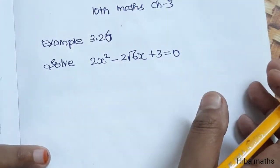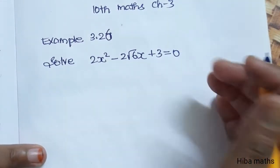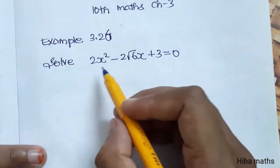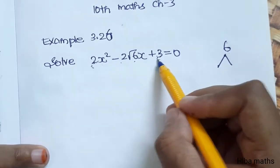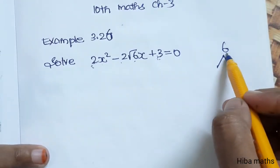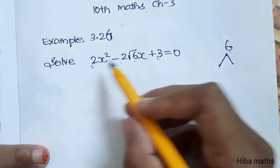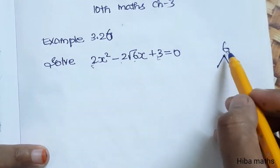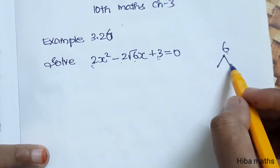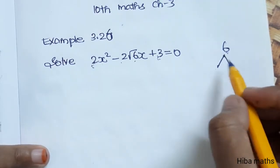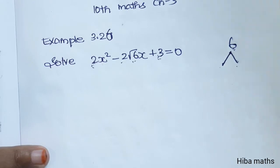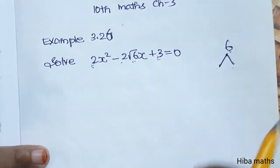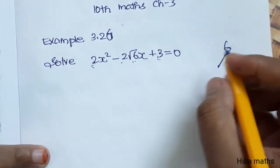We can solve this quadratic equation using the factorization method. Since 2×3 = 6, we can split the middle term: add minus 2√6 and multiply to get 6.